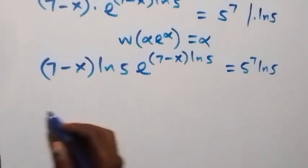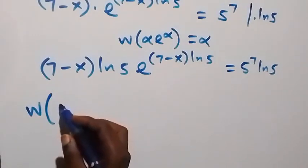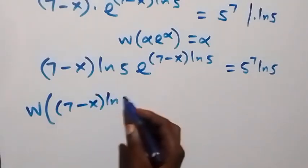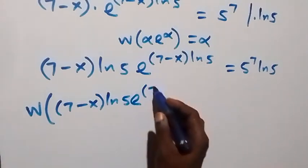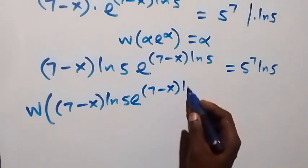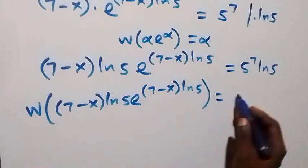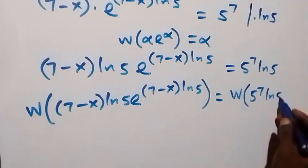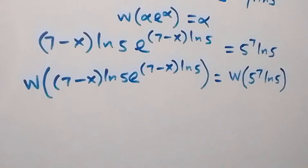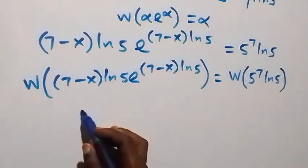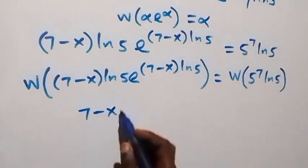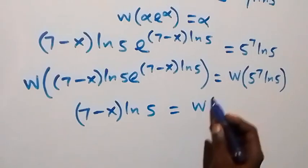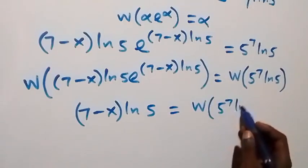We can take the W function on both sides: W of [(7 minus X)(ln 5) × e^((7 minus X) ln 5)] equals W of [5 raised to power 7 × ln 5]. Following the Lambert W property, this simplifies so that (7 minus X) ln 5 equals W of [5^7 × ln 5].